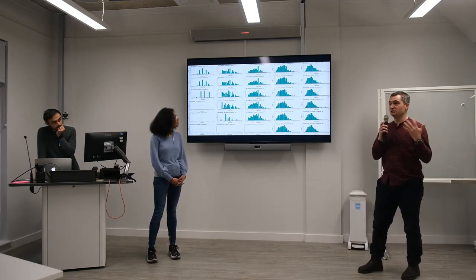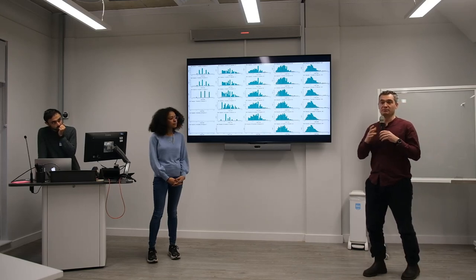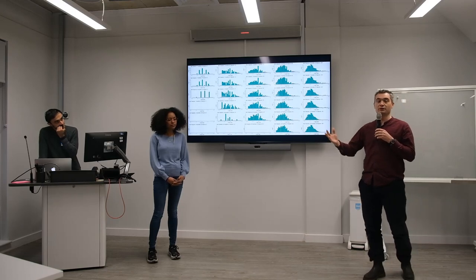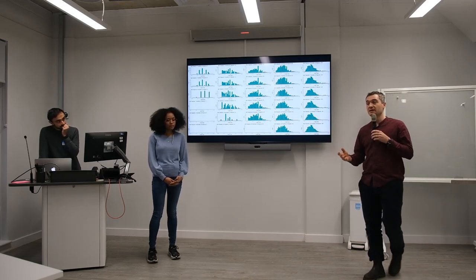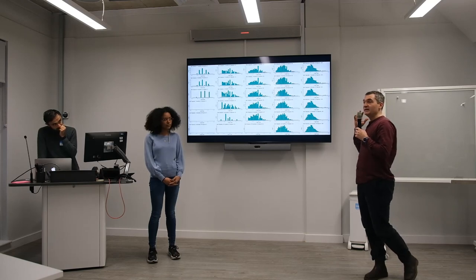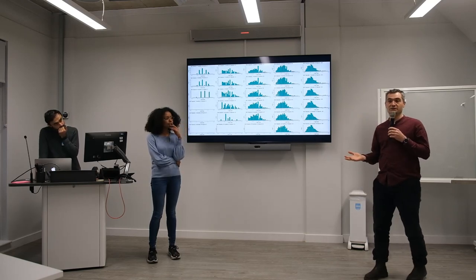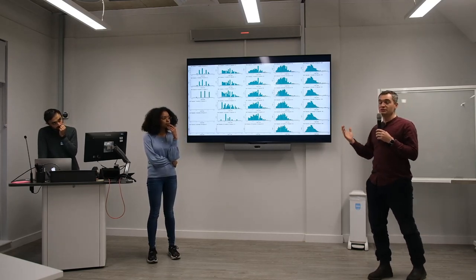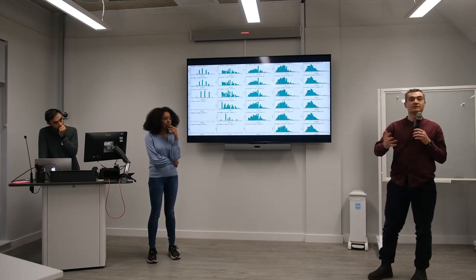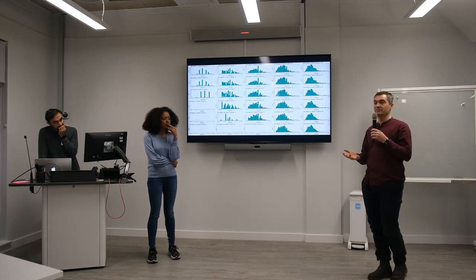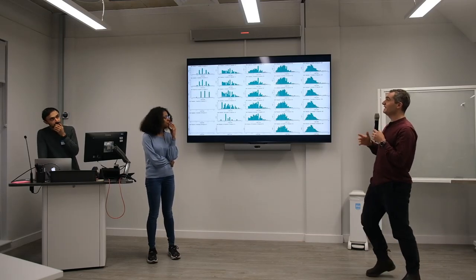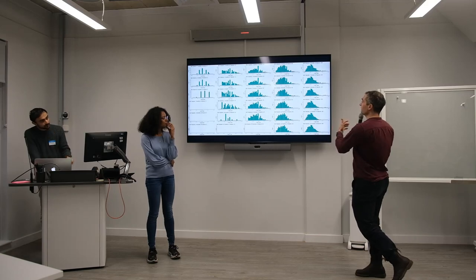With a frailty index, you just take some features from the health records — do they walk with a walking stick, have they got a normal ECG, a normal chest X-ray, a normal potassium — and you combine those features together. You divide how many of the features are abnormal by how many features you sampled. And if a feature's missing, you just don't include it. So it can deal with missing data, which almost all other algorithms can't, because they need all the data to be complete — which is a big problem in data science.